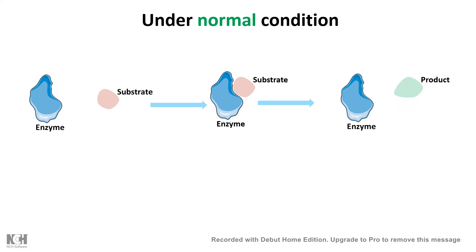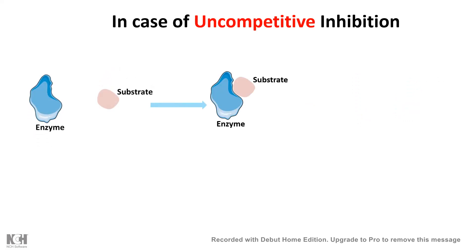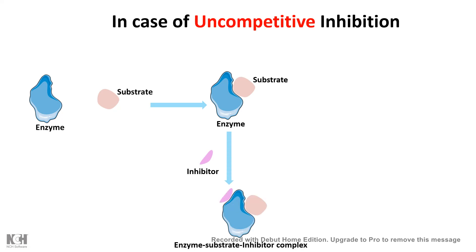Under the situation of uncompetitive inhibition, the enzyme and substrate react with each other forming the enzyme-substrate complex, but eventually the uncompetitive inhibitor binds to the enzyme-substrate complex — instead of binding to the enzyme alone. As a result, the enzymatic reaction does not proceed further and does not give rise to product formation.